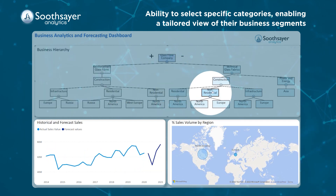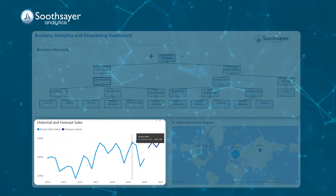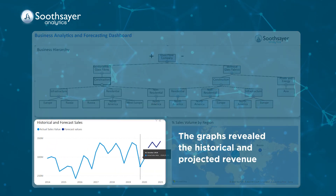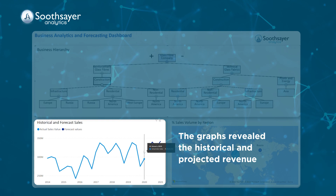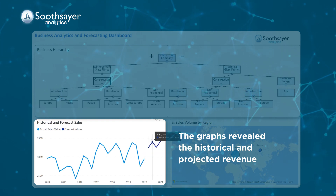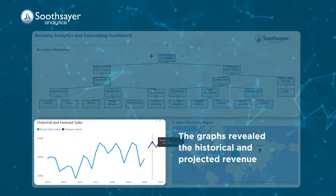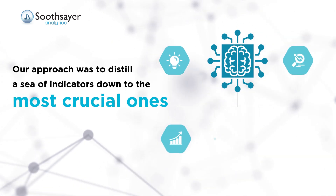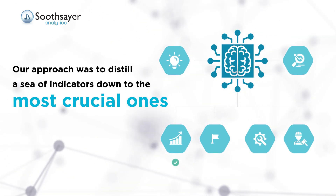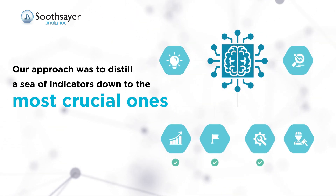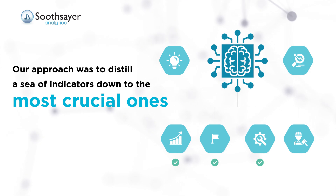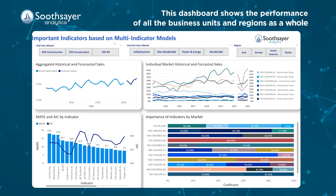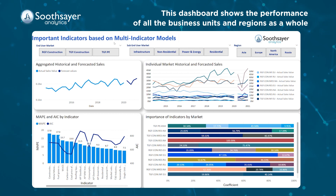The graphs revealed the historical and projected revenue, providing investors with a glimpse into the future sales of the client. Our approach was to distill a sea of indicators down to the most crucial ones to make it simple for investors to understand. This dashboard shows the performance of all the business units and regions as a whole.